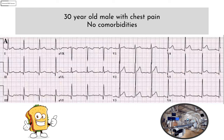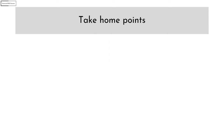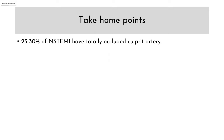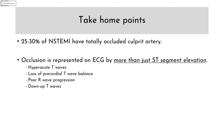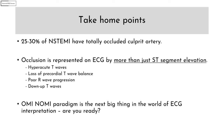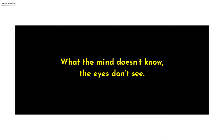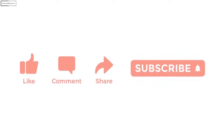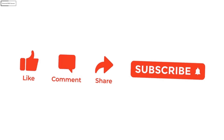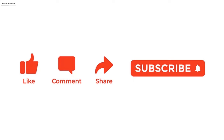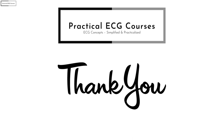Before we wind up, a few take-home points: 25 to 30% of NSTEMIs actually have a totally occluded culprit artery. Occlusion is represented on ECG by more than just ST segment elevation. The OMI-NOMI paradigm is the next big thing in ECG interpretation — are you ready for it? Remember: what the mind doesn't know, the eyes don't see. If you found this video useful, like, share, and subscribe, and click the bell icon so you don't miss any videos. Thank you.